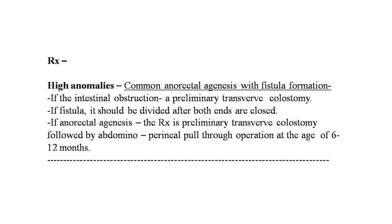Treatment of high anomalies such as anorectal agenesis with fistula formation: if there is intestinal obstruction, preliminary transverse colostomy is performed. If a fistula is present, it should be divided and both ends closed. For anorectal agenesis, the treatment is preliminary transverse colostomy followed by abdominoperineal pull-through operation at the age of 6 to 12 months.